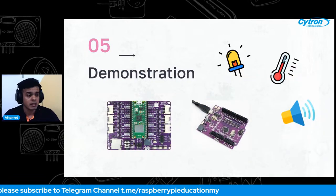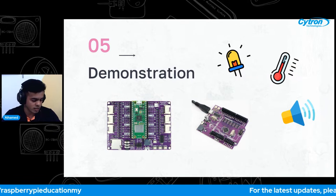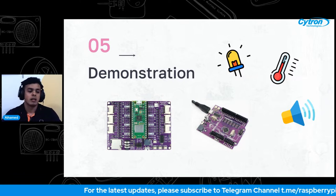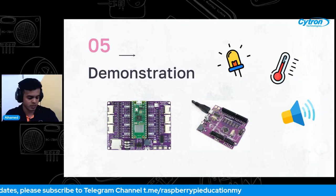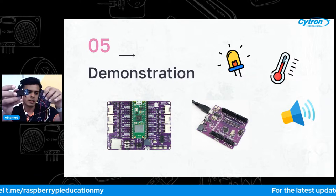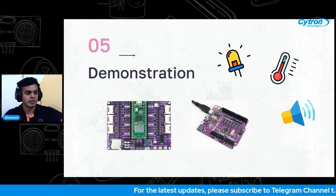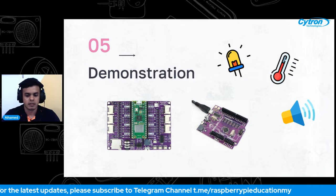Now let me demonstrate a project using both the Maker Onu and the Maker Pi Pico. I'll show you how to display temperature on an OLED screen. We'll do it first with the Maker Onu, then with the Maker Pi Pico, so you can see the differences. Let me share my screen so you can see the code.